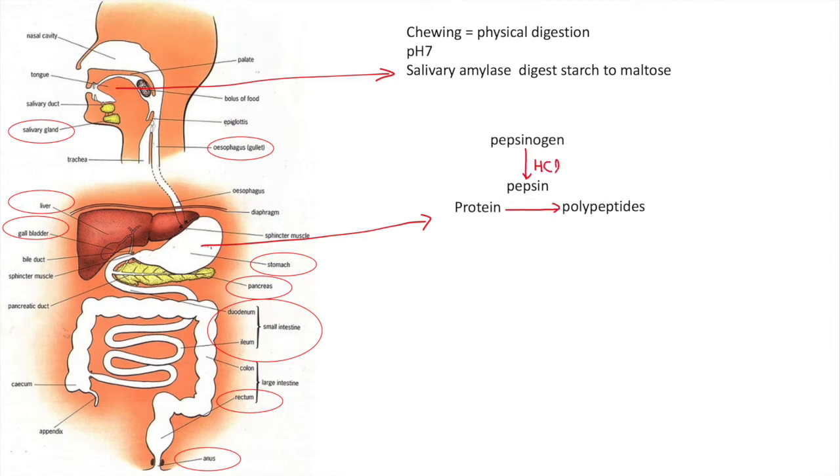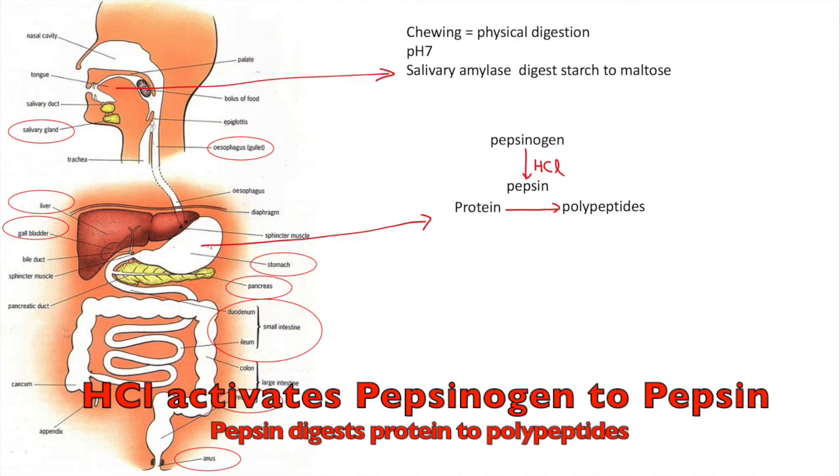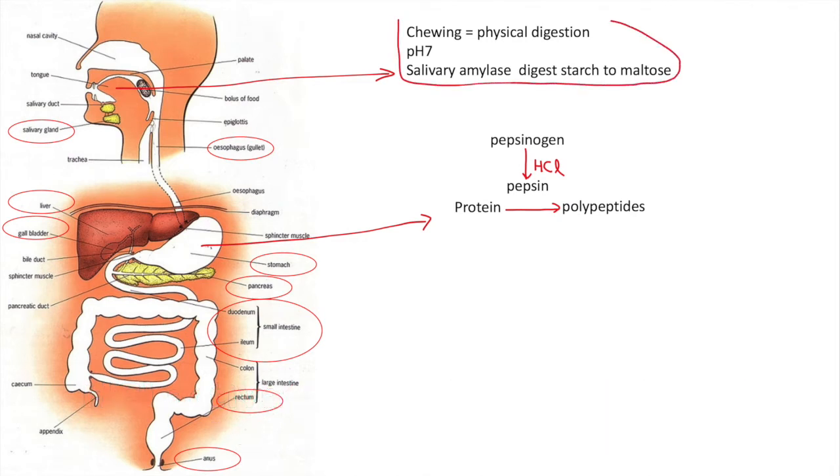In the stomach, gastric juices start to be secreted. It's acidic in nature, so it activates this protein called pepsin. Pepsin starts breaking down some proteins.